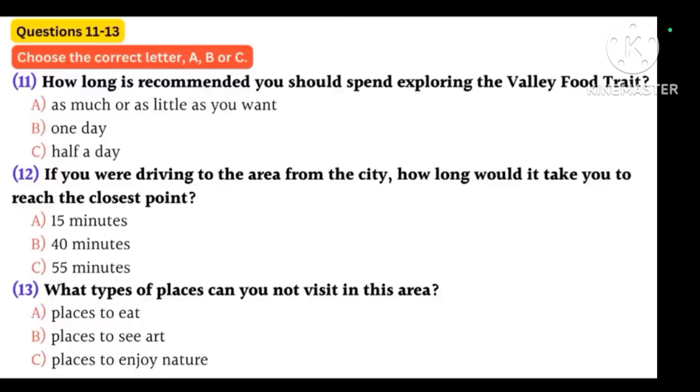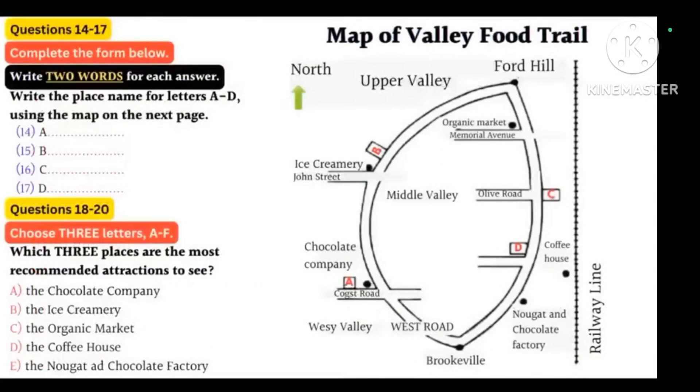Before the final part of the message, you now have 20 seconds to look at questions 14 to 20. Now answer questions 14 to 20. But let's go back to food. If we begin in Brookville and head north towards Upper Valley in a clockwise direction, passing West Valley on West Road, we cross over Coast Road to come to our first place of interest, Magic Coffee.